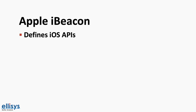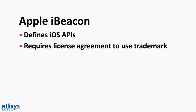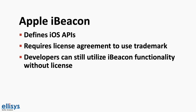The iBeacon standard also defines the iOS APIs that allow iOS developers to develop applications that interact with iBeacon-compatible devices. It requires signing a license agreement with Apple to use the name and claim compatibility with the standard. However, developers can still develop and utilize beacons that transmit iBeacon packets without signing the licensing agreement — in that case they would not be able to state that their devices are iBeacon compatible, but they can still develop apps that leverage iBeacon functionality.